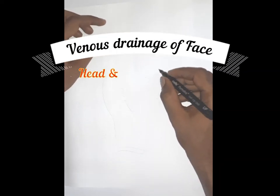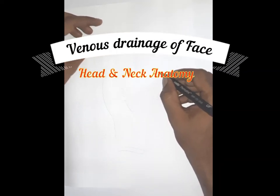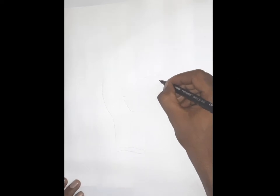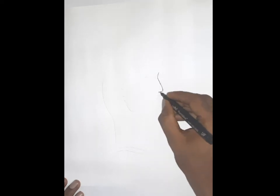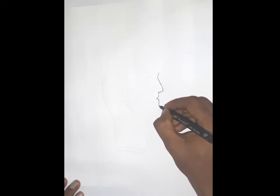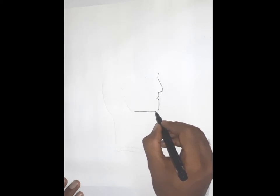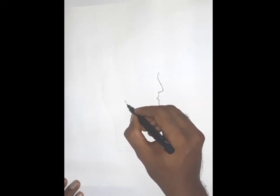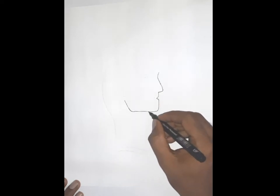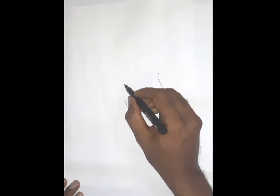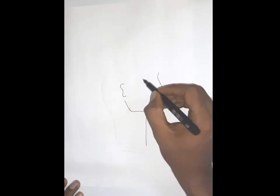Hi everyone, we're going to see the venous drainage of the face. The venous drainage of the face involves the facial vein, which accompanies the facial artery. A simple diagram showing the face is enough to understand this.